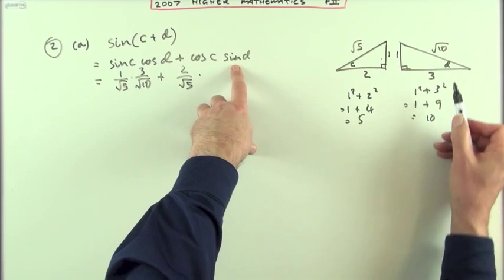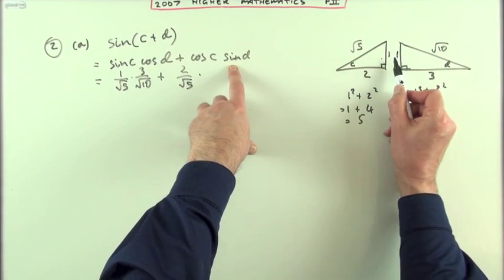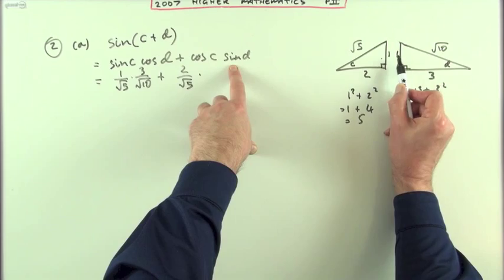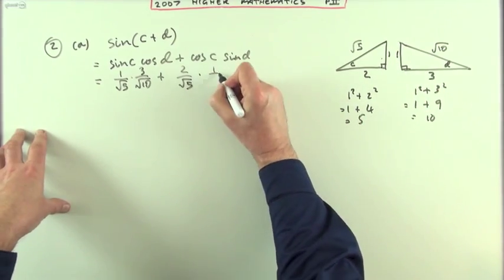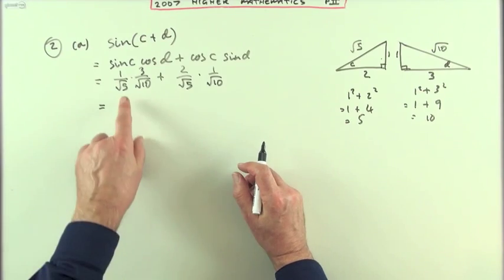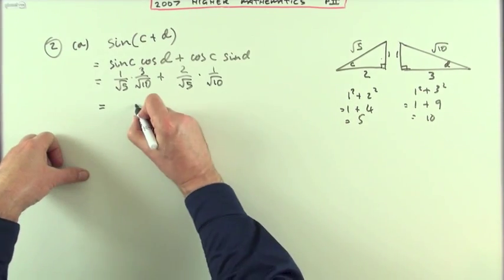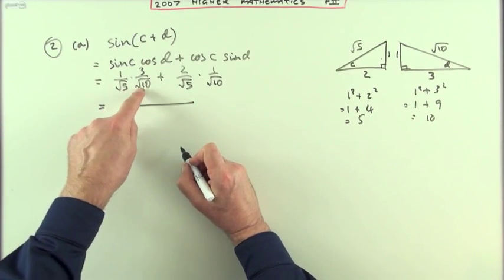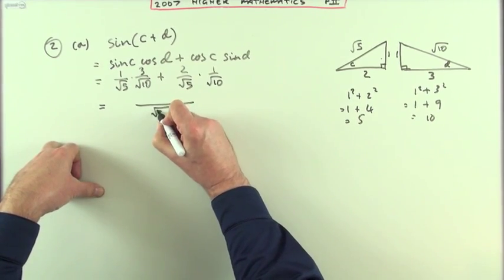The sine of d, that's the angle without the d. That's this side here, the opposite side 1 over the hypotenuse, 1 over root 10. Both the denominators have got root 5 times root 10, so I'll just put that down once. And root 5 times root 10 is root 50.